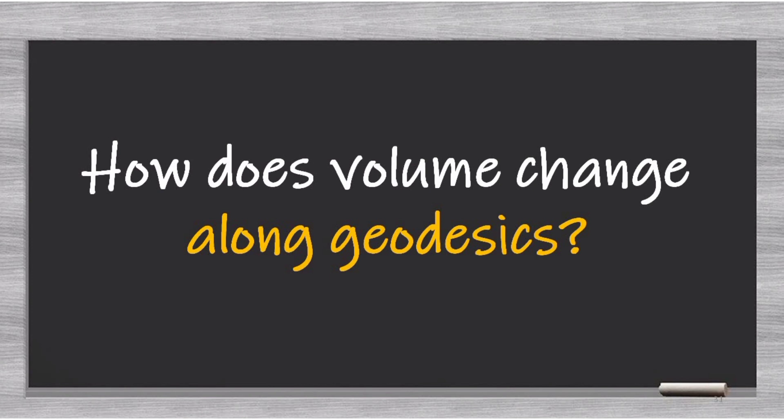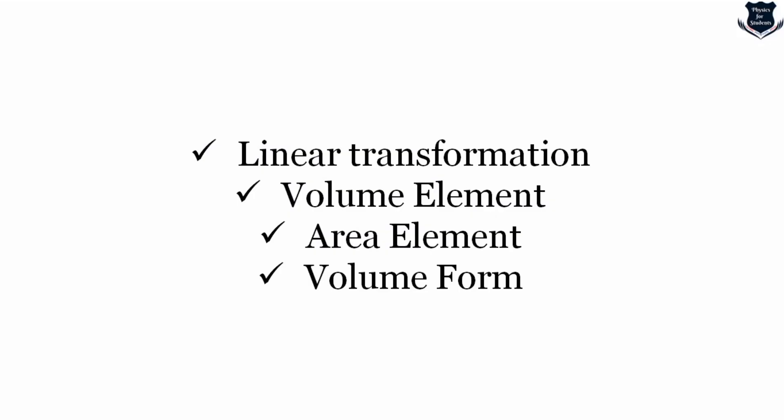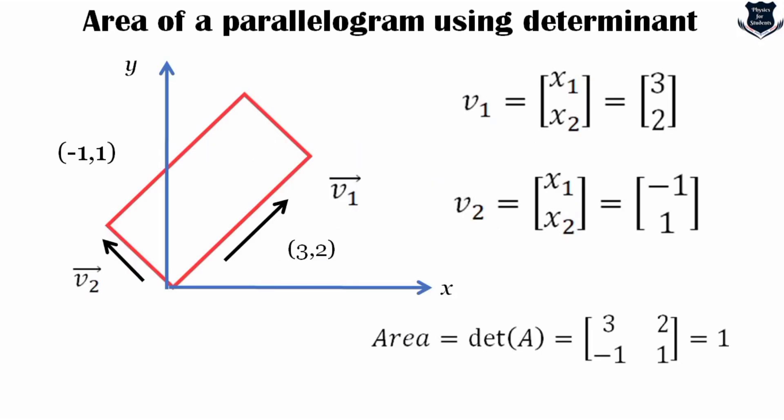Now that we understand Ricci tensor measures volume change along curvature, we need to explore how volume changes along geodesics. To do this we go through linear transformation, volume element, area element, and the volume form. If you are already aware of the first three, you can skip this part, but they are included to make this a single comprehensive video.